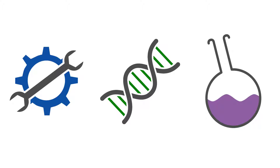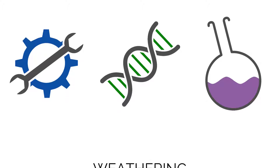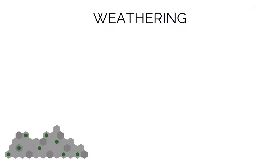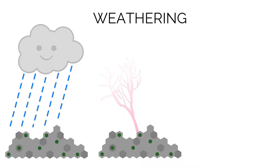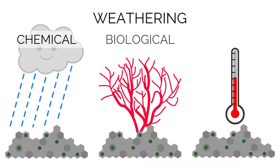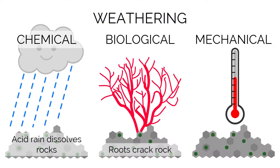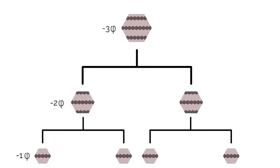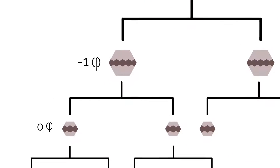First, clastic sedimentary rocks — those formed mechanically. We need to understand weathering and erosion to understand how these form. Weathering is the in-situ breakdown of rocks at the Earth's surface by the action of rainwater, biological activity and changes in temperature, known as chemical, biological and mechanical actions respectively. This means none of the rock is transported away; it just stays where it is, forming smaller and smaller fragments over time.